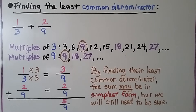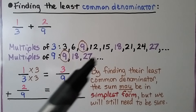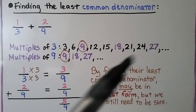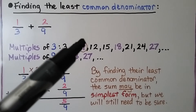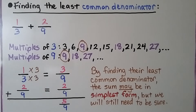Adding 1 third plus 2 ninths by finding the least common denominator: we list the multiples of 3 and the multiples of 9. They have several multiples in common — 9, 18, 27 — and the least is 9. So we leave 2 ninths as it is, and multiply 3 times 3 to get 9, then multiply the numerator by 3. We get 3 ninths plus 2 ninths, which equals 5 ninths. By finding the least common denominator, the sum may already be in simplest form, but we still need to check that 1 is the only common factor for the numerator and denominator.